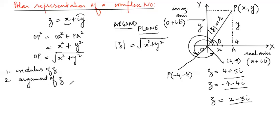What is the argument of Z? We write it as ARG of Z. Argument of Z is clear. And now, if you see here,